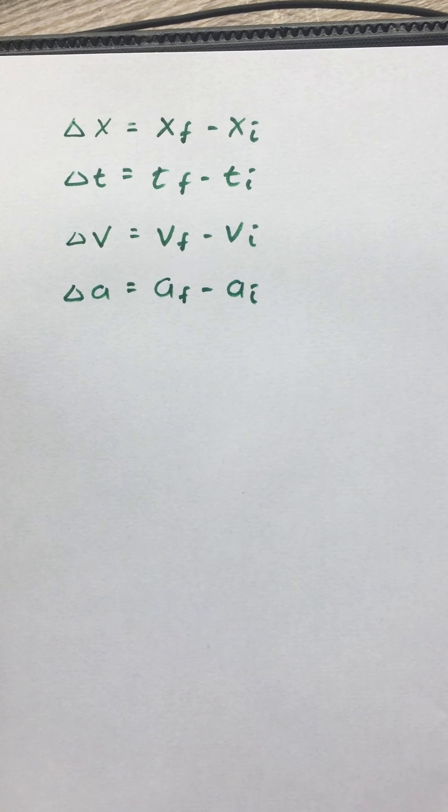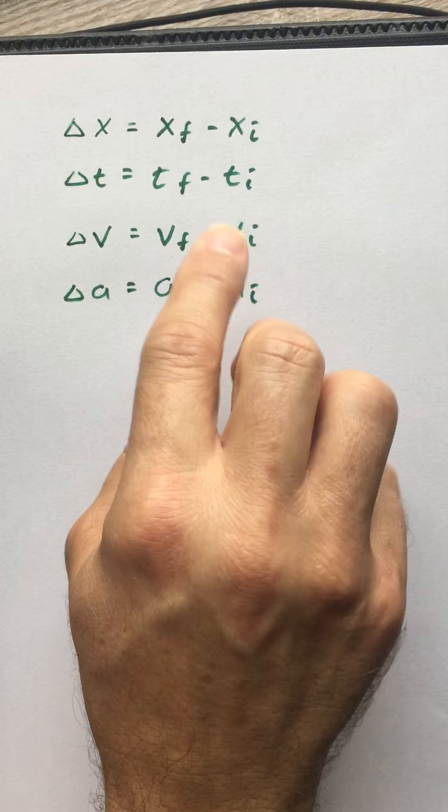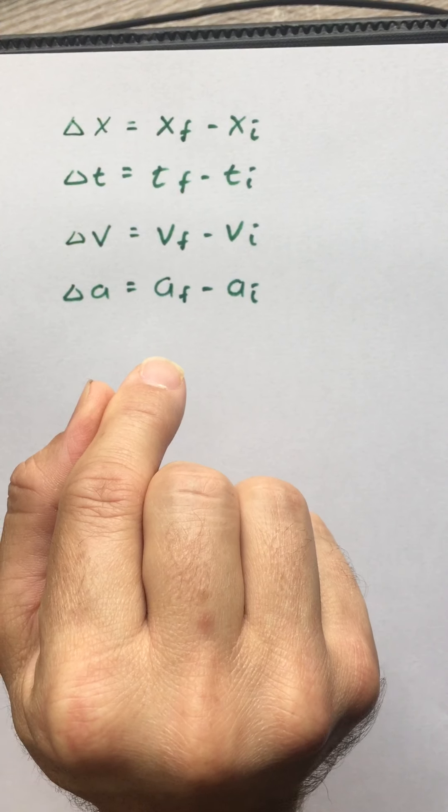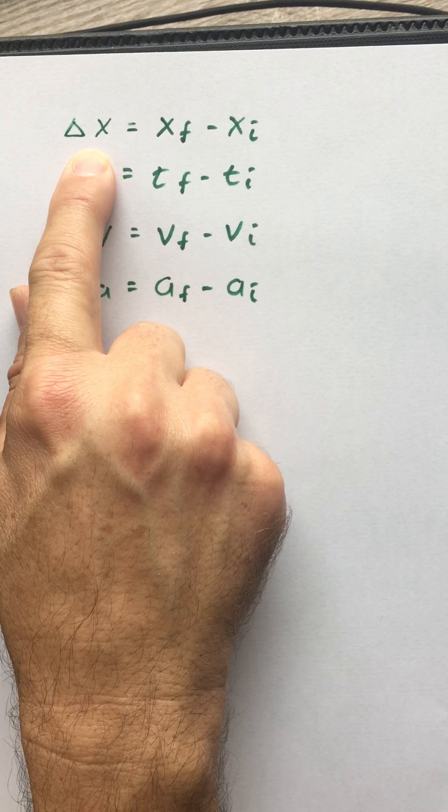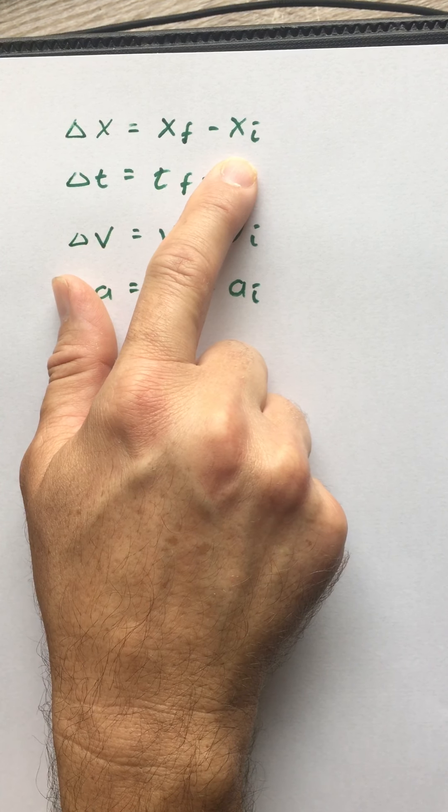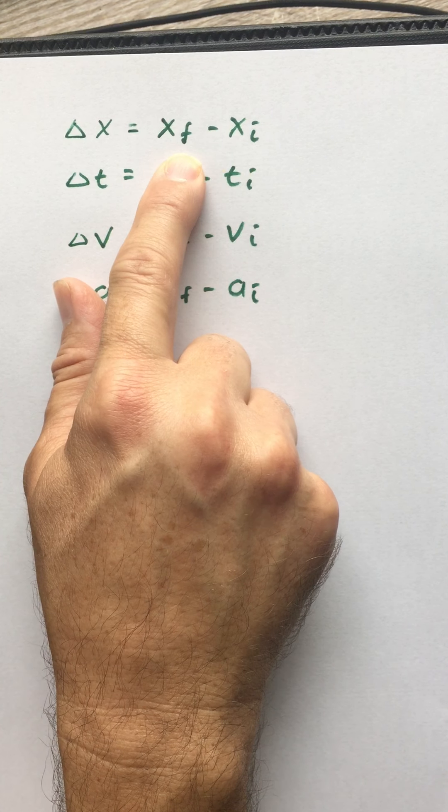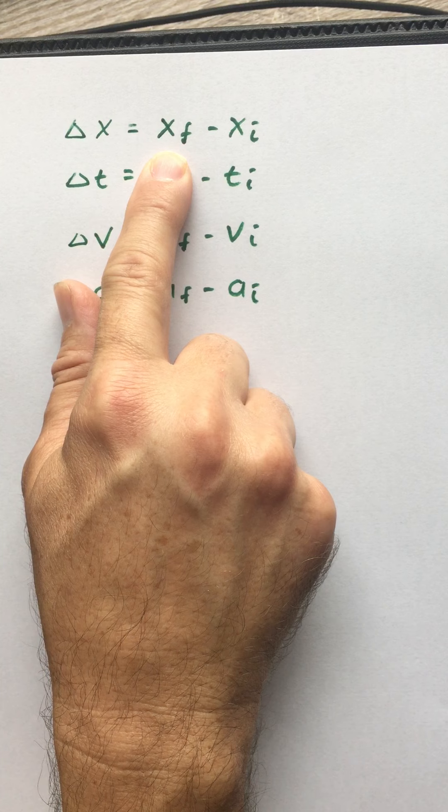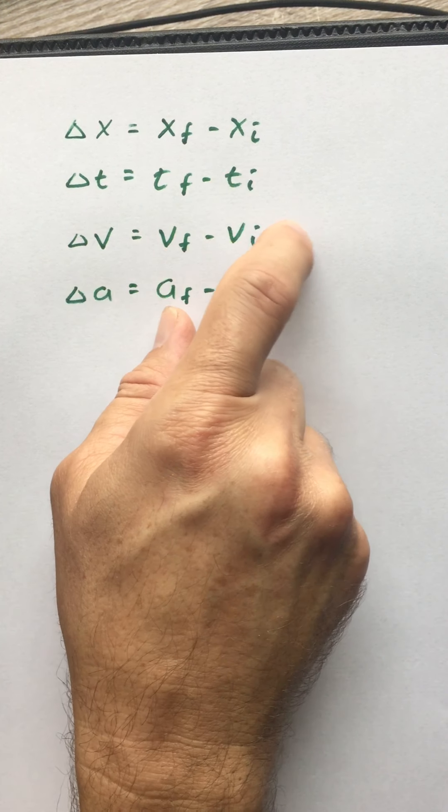So what I want to call your attention to is a couple things. If something is not moving, let's look at this one. If the position of something is not changing, what that means is that xf minus x initial equals zero. Those are the same positions. If it's sitting at five meters from the origin, five meters minus five meters turns out to be zero, right? And so any of these could be zero.